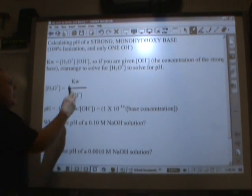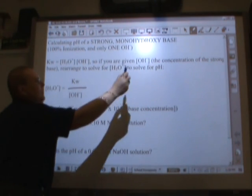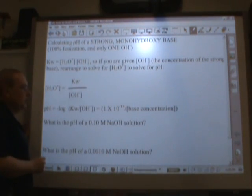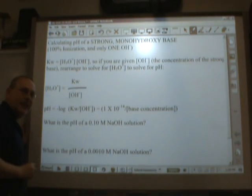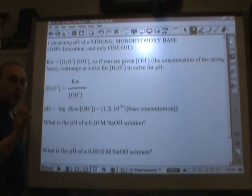So for a shortcut, you take 10 to the negative 14th, divided by the base concentration, and then that's the number you take the negative log of. Now I have to stress this,